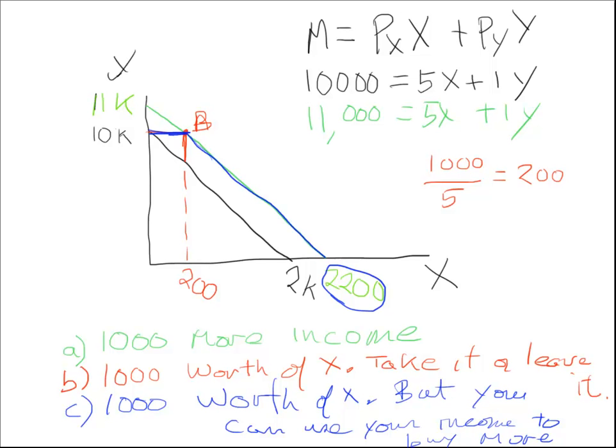Hopefully that helped in terms of looking at different shifts in the budget constraint or even a point along, where we had the B case where you're just kind of take it or leave it. It's a certain quantity they're offering you. Budget constraints are kind of fun, don't you think?